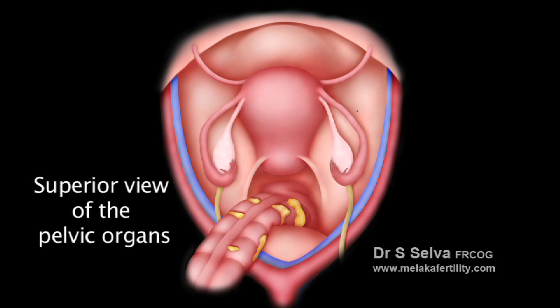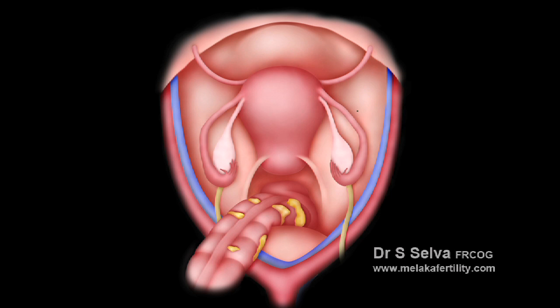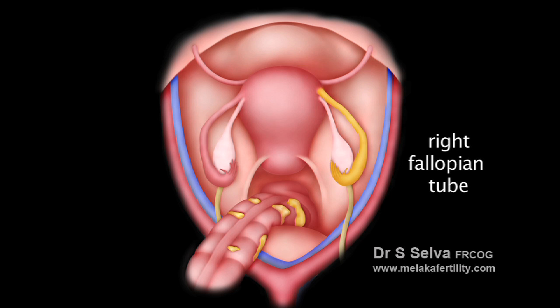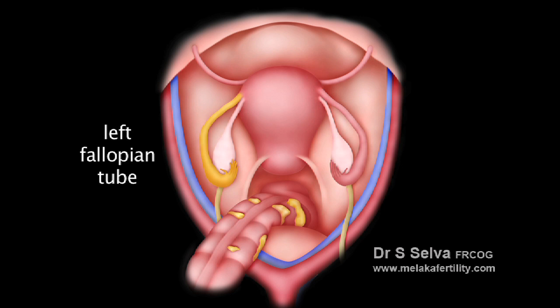This is a different view of the female pelvis — how the pelvis looks when a gynecologist examines it either through a laparotomy, which is a large incision on the abdomen, or through a laparoscope, a keyhole surgery. The uterus is in the center. This is the right fallopian tube and this is the right ovary. This is the left fallopian tube and this is the left ovary.